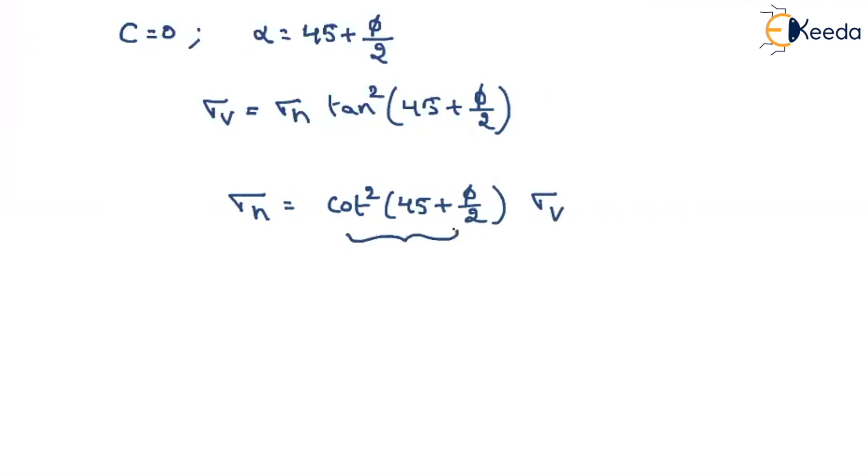If I assume this is some constant k, now we are talking about the active earth pressure, that's why we will represent it with k subscript a. Sigma h is nothing but active earth pressure that will be equal to some constant Ka into sigma v. That means wherever the point, if you can find the vertical stress, then by multiplying some constant Ka, we can obtain the active earth pressure.